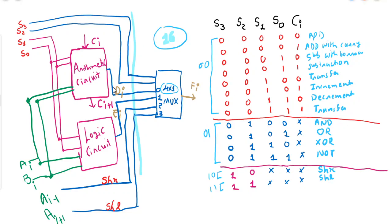If we consider the circuit for one bit and we have a 64-bit ALU, then we will have 64 such units, where each unit performs the individual bitwise operation. The overall circuit is divided by a marked line into left and right sides; the right side selects the input from the left and forwards the output. The four selections are: arithmetic circuit, logic circuit, shift right, and shift left.